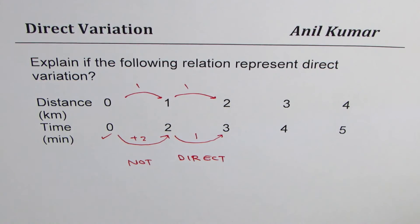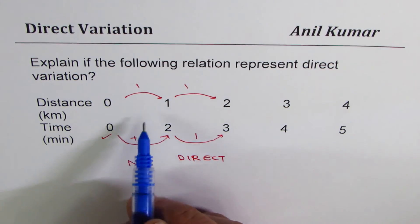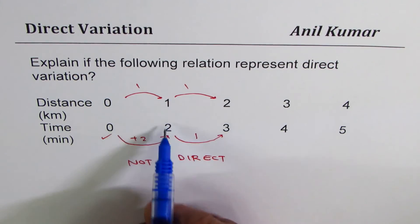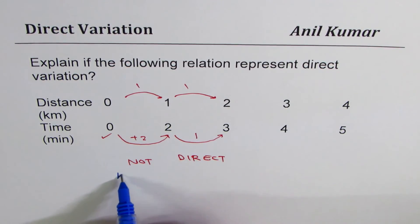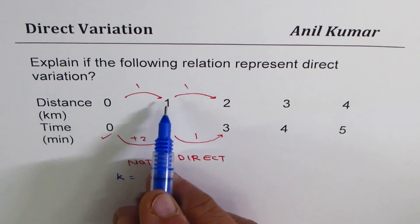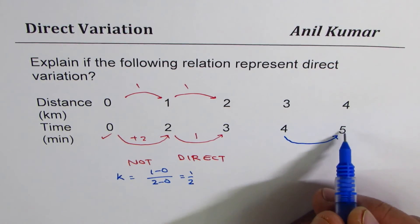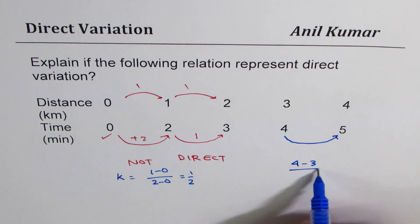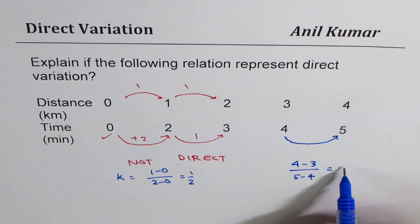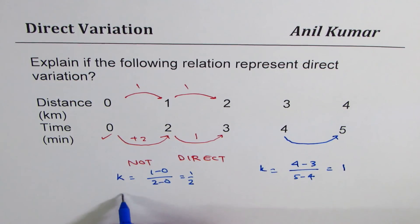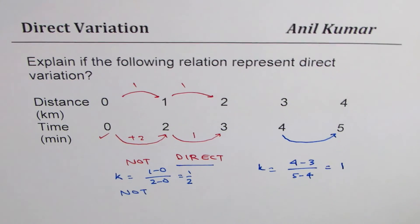If you try to find the value of k using time after 2 minutes, you will get the value of k in this portion as change in distance, which is 1 minus 0, divided by 2 minus 0, which is half. On the other hand, if you find k here, you get 4 minus 3, divided by 5 minus 4, which is 1. These two values of k are different, and therefore, it is not a direct variation.